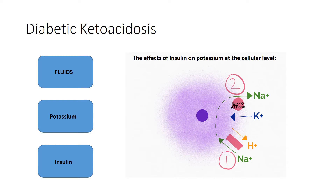If the potassium is within the range of 3.3 to 4.9, you can go ahead and add anywhere from 20 to 30 mEq in each liter of IV fluid to keep the serum potassium around 4 to 5. And if the potassium is greater than 5 mEq per liter, hold potassium while closely monitoring serum potassium every two hours.